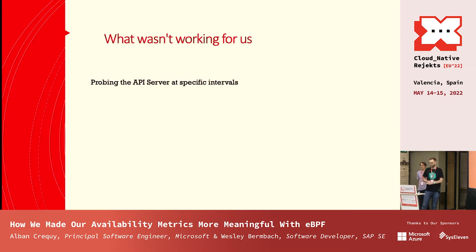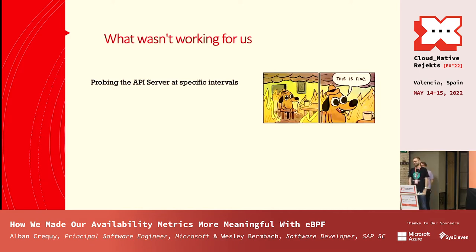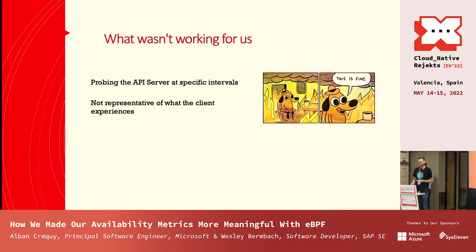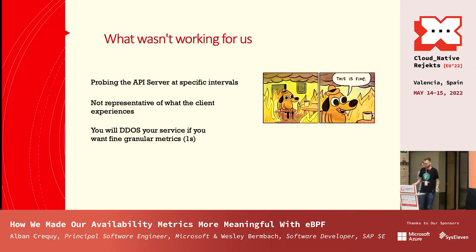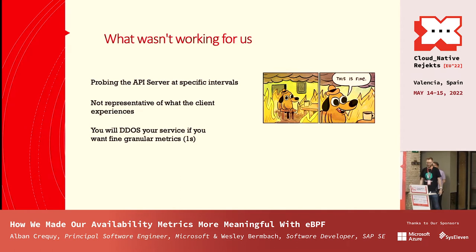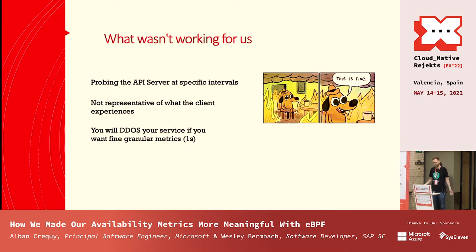One approach that wasn't working well is probing the API server at specific intervals. If you probe once per minute, it may report uptime while there's downtime in between probes. To get one-second granularity — necessary for the 43-second daily budget — you'd have to probe every second, basically DDoSing your own API server with unnecessary load. Also, the probe might fail for connectivity reasons unrelated to the API server's health.